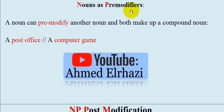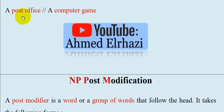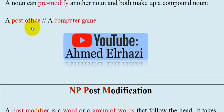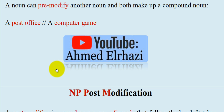Nouns as pre-modifiers. A noun can pre-modify another noun, and both together make up a compound noun. For example, a post office — 'post' is a noun and 'office' is a noun, so 'post office' is a compound noun where 'post' modifies 'office'. Similarly, a computer game — 'computer' and 'game' are both nouns, so 'computer game' is a compound noun.